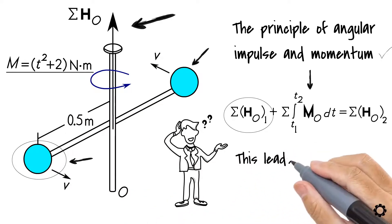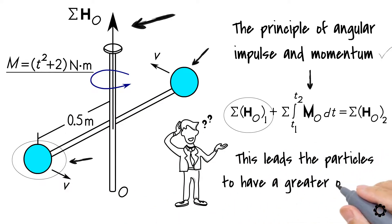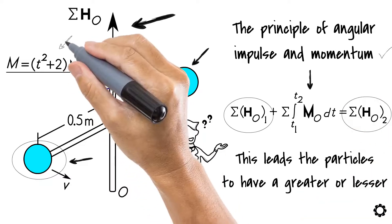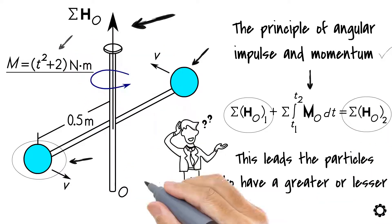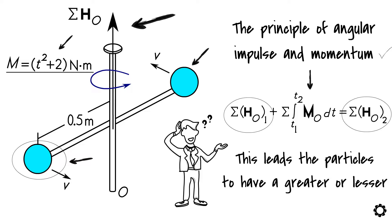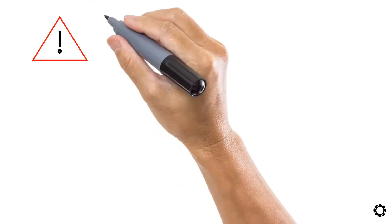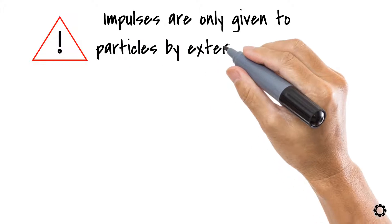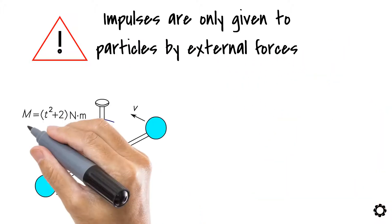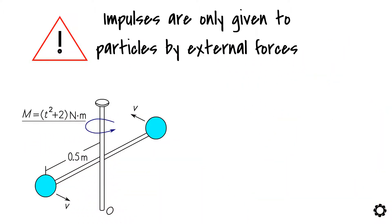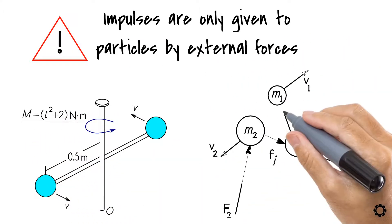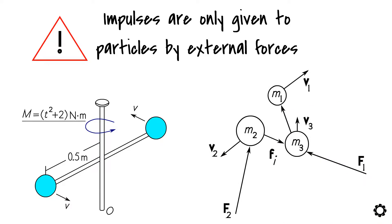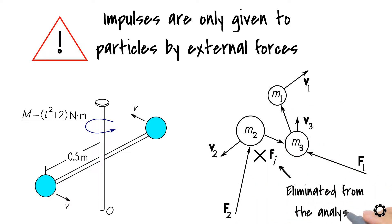This leads the particles to have a greater or lesser angular momentum depending on the overall nature of angular impulses. It's important to keep in mind that impulses are only given to particles by external forces that apply moments on the system, and not by the possible internal impulsive forces, which will actually be eliminated from the analysis.